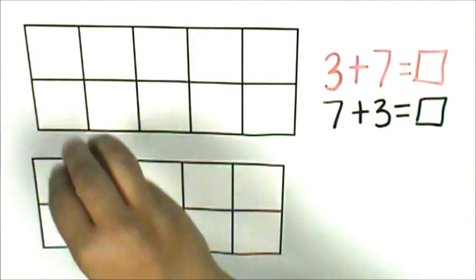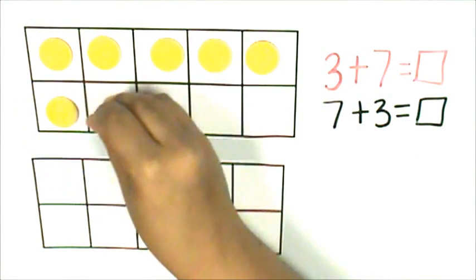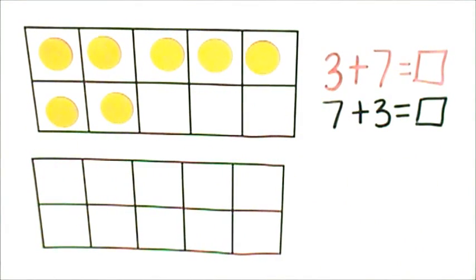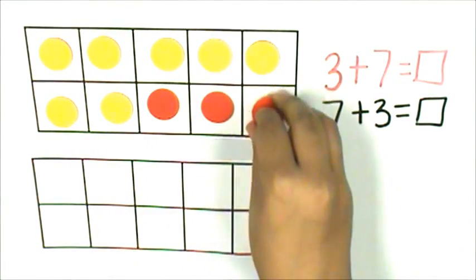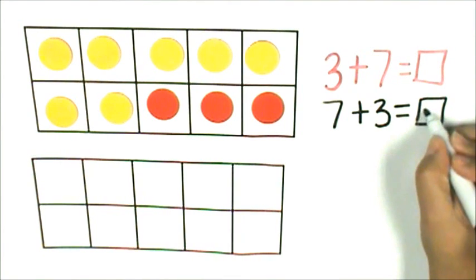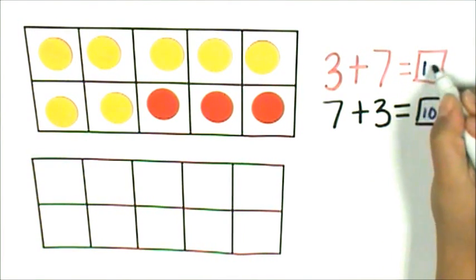That means I have 7 and then I just count on 3: 7, 8, 9, 10. 7 plus 3 is 10, and that means 3 plus 7 is 10.